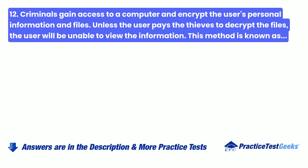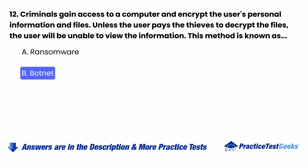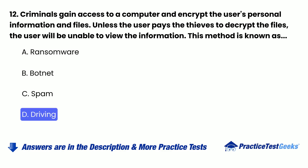Question 12: Criminals gain access to a computer and encrypt the user's personal information and files. Unless the user pays the thieves to decrypt the files, the user will be unable to view the information. This method is known as: a. Ransomware. b. Botnet. c. Spam. d. Driving.